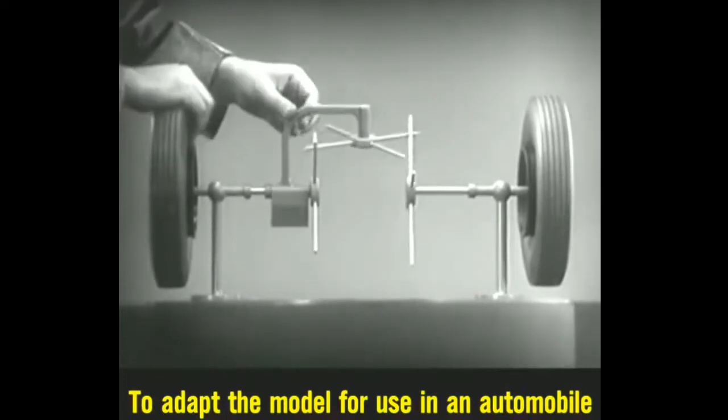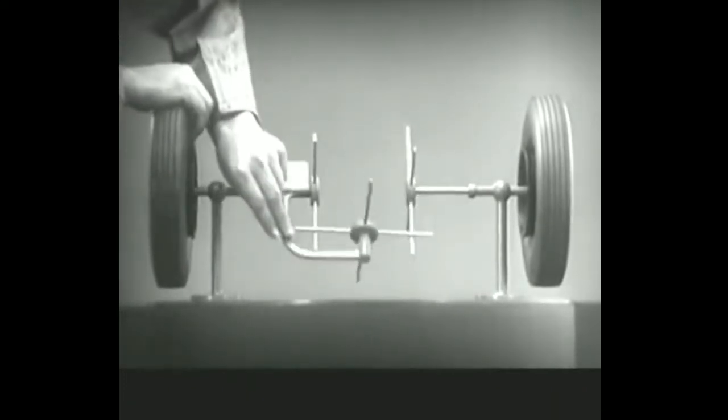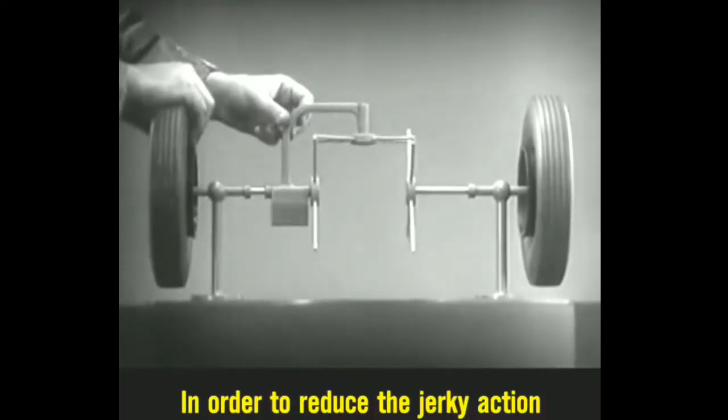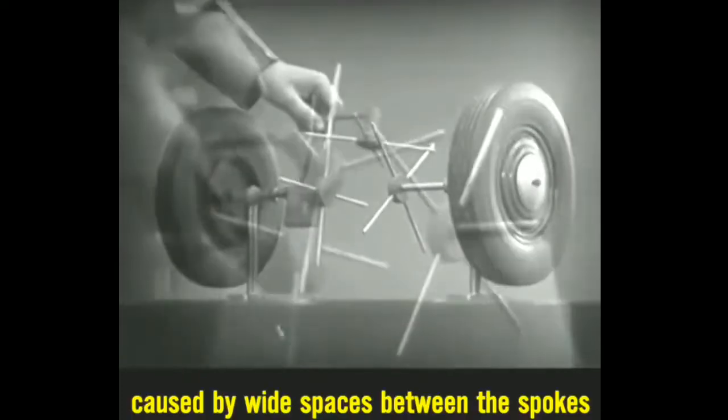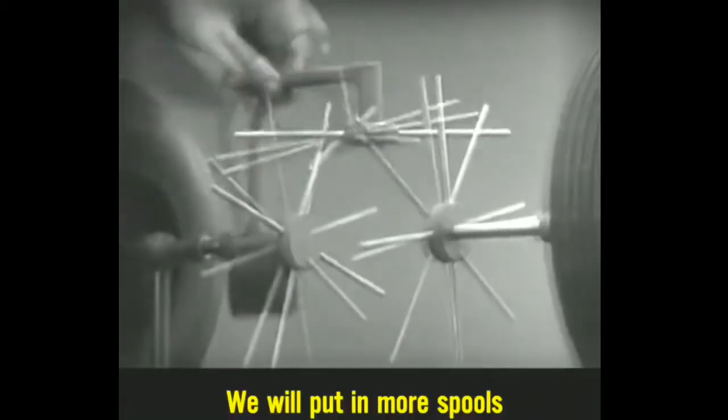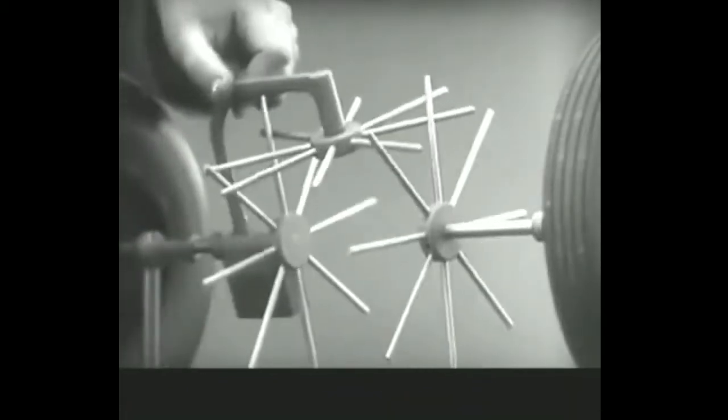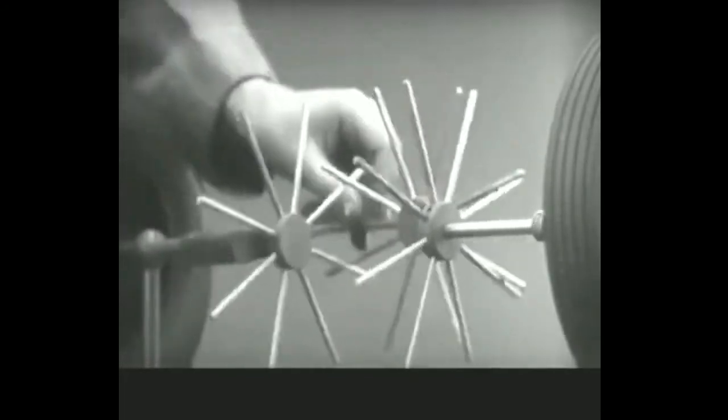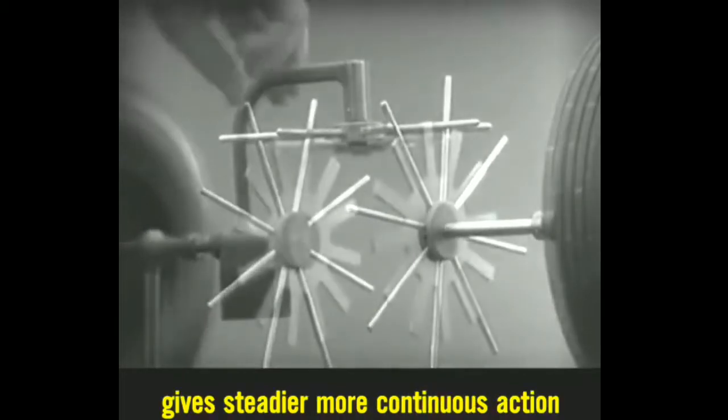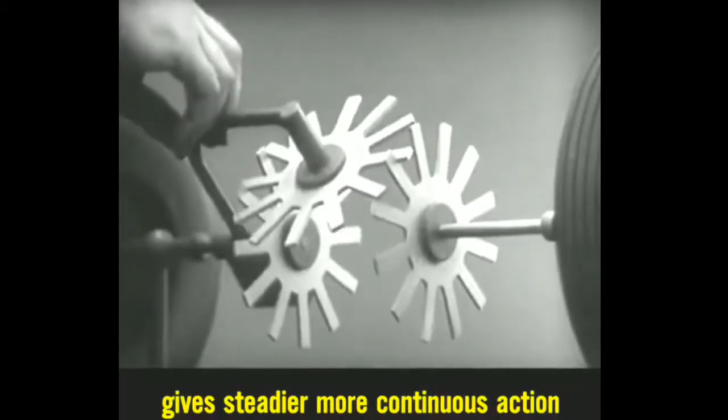To adapt the model for use in an automobile, we will have to make a few changes. In order to reduce the jerky action caused by wide spaces between the spokes, we will put in more spokes. Further filling in the spaces between the spokes gives steadier, more continuous action.